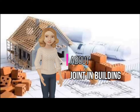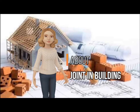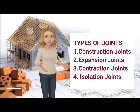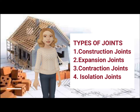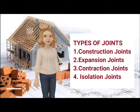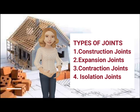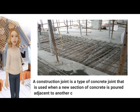Hello everyone, today we will discuss different types of joints in buildings. We have four types of joints in a structure: first is construction, second is expansion, third is contraction, and fourth is isolation.